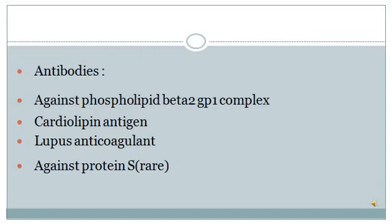Another important feature in antiphospholipid antibody syndrome is the presence of antibodies. In this condition, you will find a lot of antibodies. These antibodies are against phospholipid beta-2 glycoprotein 1 complex, against the cardiolipin antigen, against the lupus anticoagulant, and against protein S. However, the main antibody which you are always going to find in this condition is against the phospholipid beta-2 glycoprotein 1 complex. This is the main antibody which you find in APS.